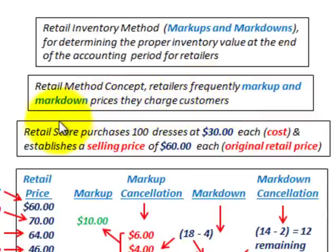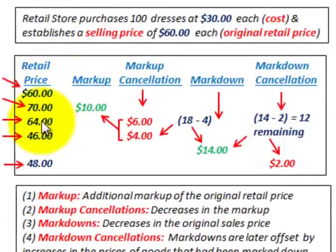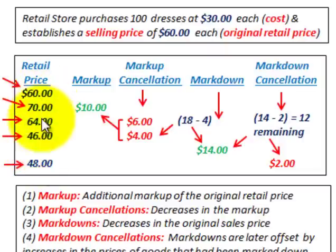We're going to look at this example where the retail store purchases 100 dresses at $30 each — that would be considered the cost. They then establish a selling price of $60 each, which is considered the original retail price. We're going to start with that $60 retail price and look at increases and decreases made by the store manager on the sale of these dresses.